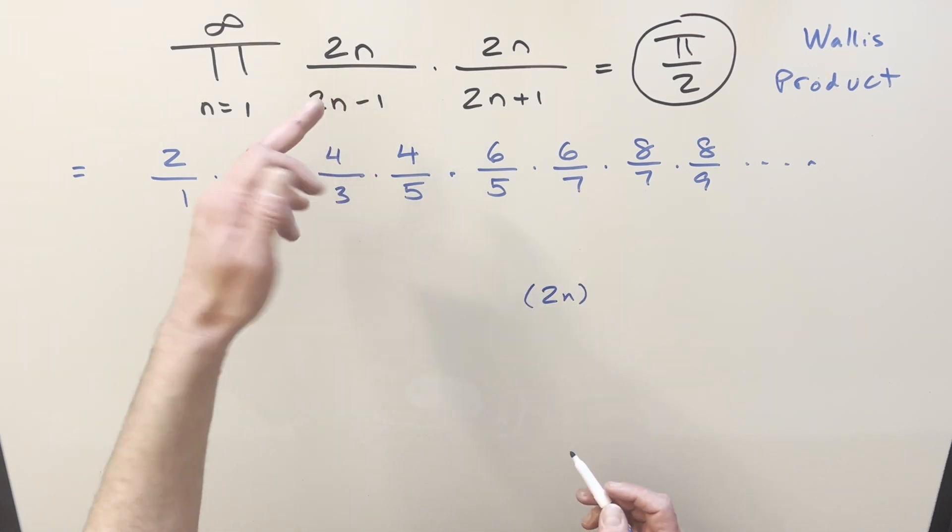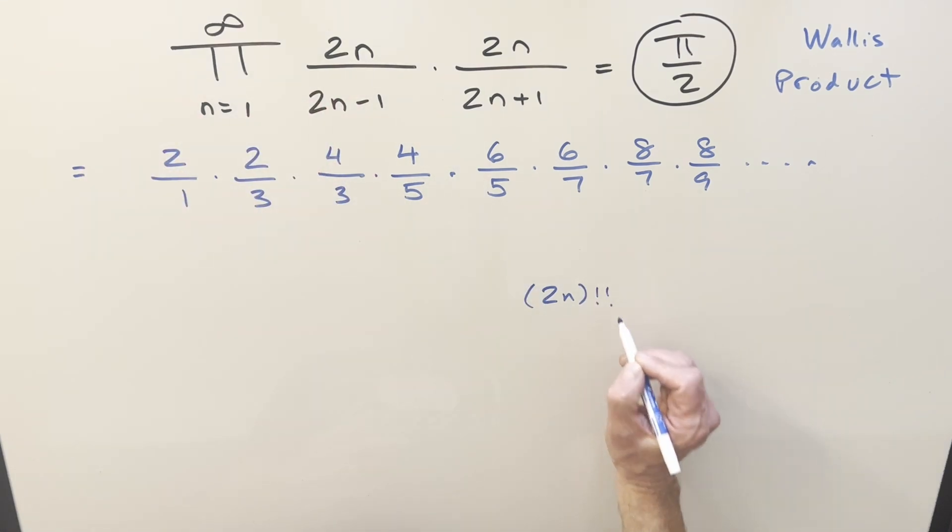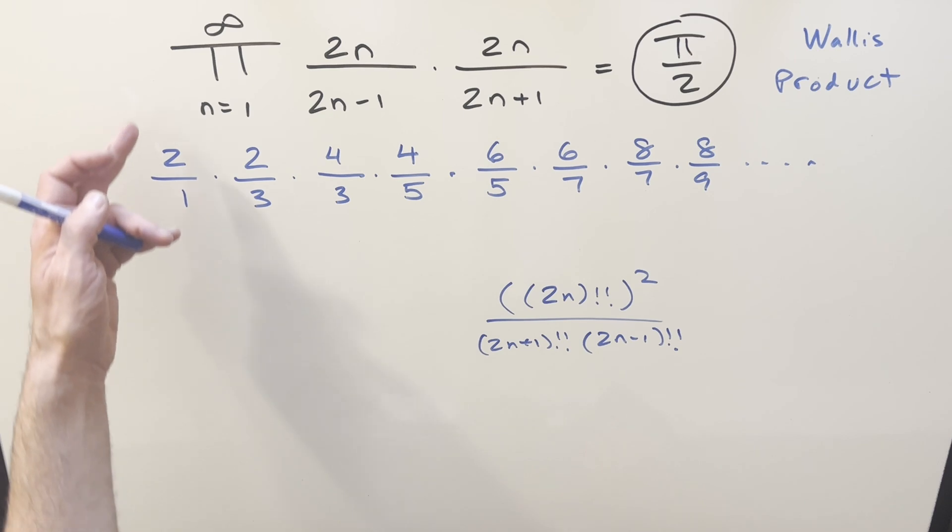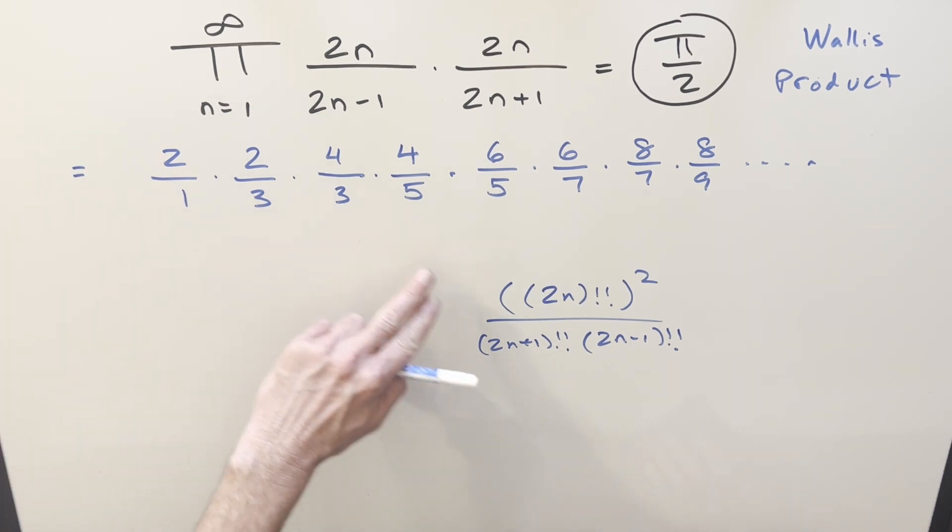And then it was over something like 2 n plus 1 double factorial times 2 n minus 1 double factorial. Again, probably doesn't make sense to write it this way when we're going to infinity. But it's kind of nice if you've got a large n value in this pattern, you can estimate it as pi over 2.